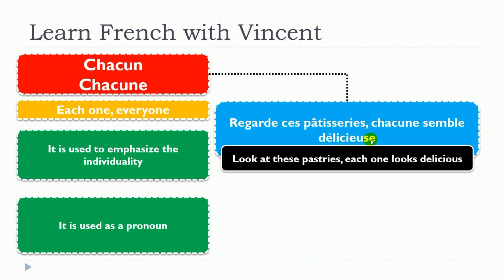In this situation, it's quite interesting because as you can see, we want to replace pâtisserie. Pâtisserie is a feminine plural noun, so we go back to the singular form and we keep the feminine form, using the feminine pronoun chacune.